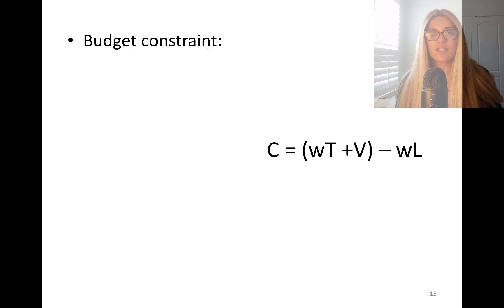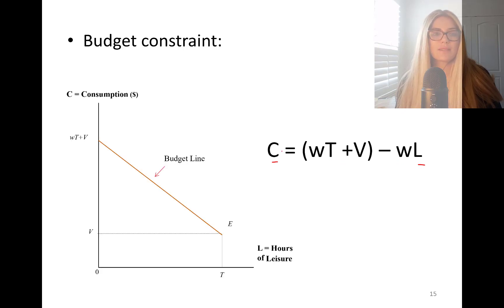So budget constraint, we derived budget constraint in terms of, now it's in terms of consumption in terms of your leisure. W, T, V constant. So this is what my budget line looks like, folks, and we are going to derive it slowly. You have leisure here L, consumption here on the y-axis.